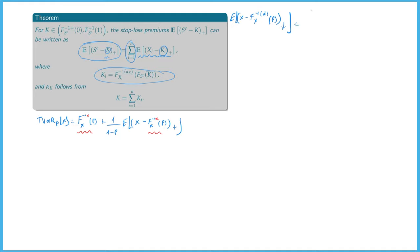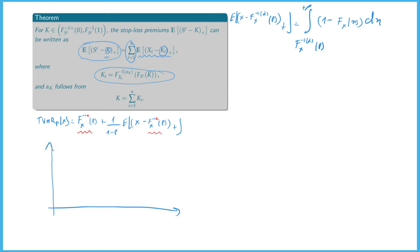We know that a stop-loss premium is an integral: we go from the retention F_X^{-1,alpha}(p) all the way to plus infinity of 1 minus the CDF F_X(x) dx. The alpha inverse is the same as the usual inverse if the CDF is strictly increasing. We only have a problem with the inverses when the CDF is horizontal — is flat. For example, in this CDF, if I take p equal to this value, then the smallest inverse is F_X^{-1}(p), the largest inverse is F_X^{-1,+}(p), and the alpha inverse is somewhere in between.